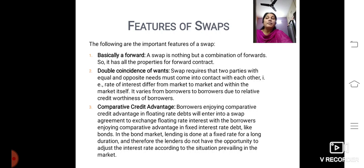Firstly, it is a forward contract. A SWAP is nothing but a combination of forwards, so it has all the properties of a forward contract. Second, double coincidence of want: SWAP requires that two parties with equal and opposite needs must come into contract with each other.